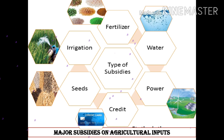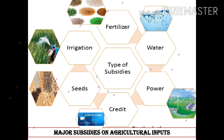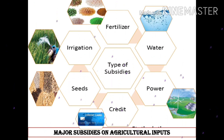The major subsidies on agriculture inputs are: first, fertilizer; second, water; third, power; fourth, credit; fifth, seed; and sixth, irrigation. These are the major subsidy categories in agriculture input.